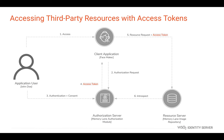Next, the Facemaker client application attempts to access the MemoryLane resources, where the access token gets passed to the MemoryLane resource server. Next, the MemoryLane resource server sends the access token back to the MemoryLane authorization server and gets it validated. Once the access token is validated, the MemoryLane resource server allows the Facemaker client application to access the MemoryLane resources.